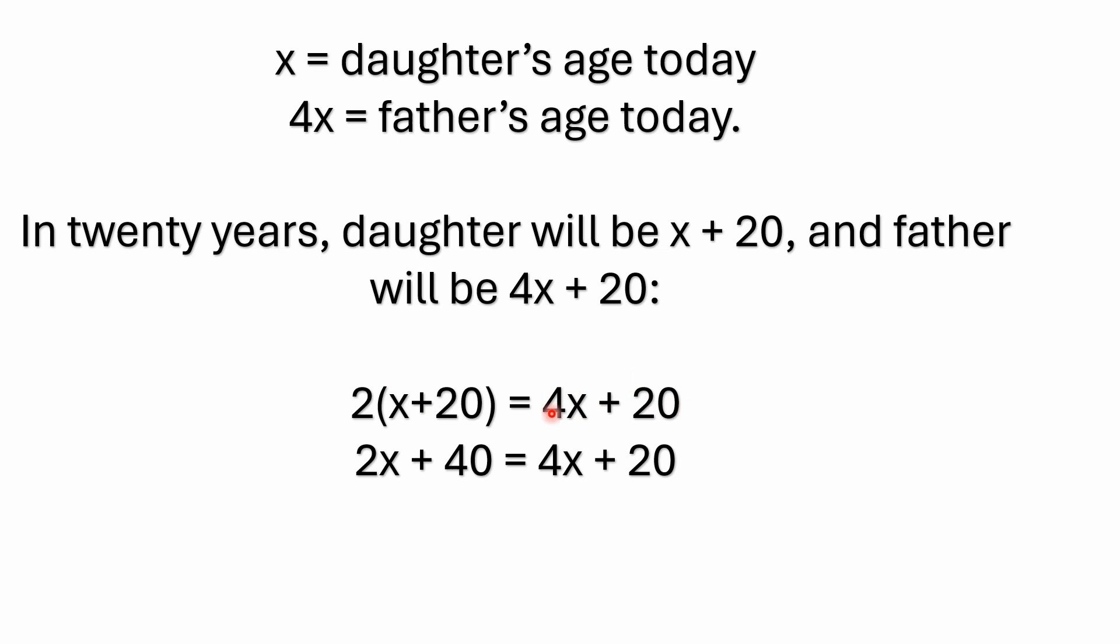So if we say the father will be 4X plus 20 years old 20 years from now, and we multiply the daughter's age 20 years from now by 2, well, that sets up an equation that we can solve. We can actually then solve for X. So we have 2 times the quantity X plus 20 equals 4X plus 20. If you multiply this out, you're left with 2X plus 40 equals 4X plus 20.